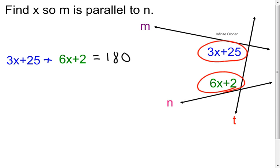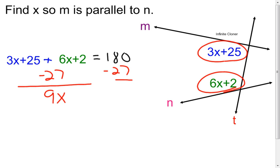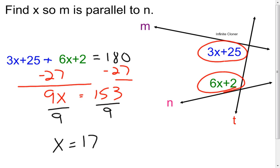Now it's a matter of solving an equation. I'm going to subtract 27 from both sides — because 25 plus 2 is 27 — and I end up with 9x on the left side and 153 on the right side. Dividing both sides by 9, I find that x equals 17.